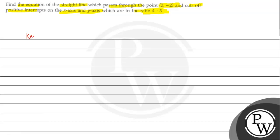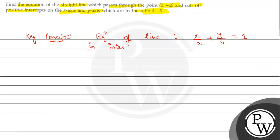Passing point given is (3, -2). Key concept: first of all, to find the equation of straight line, we use the intercept form: x/a + y/b = 1. It is in intercept form. Now, let's solve this concept.